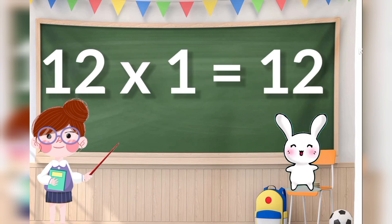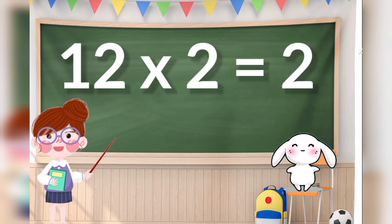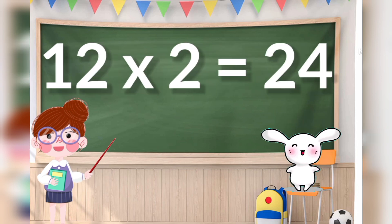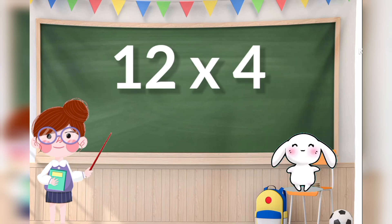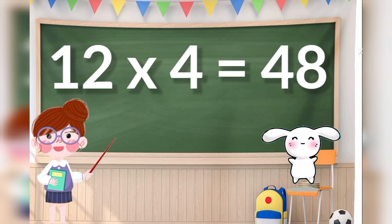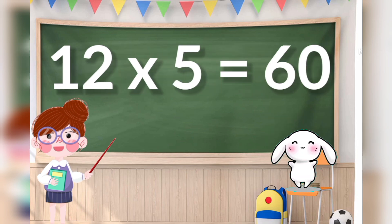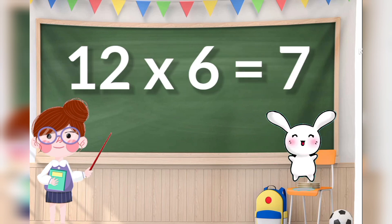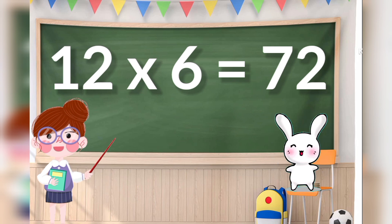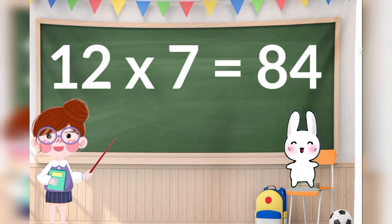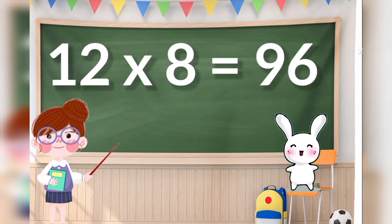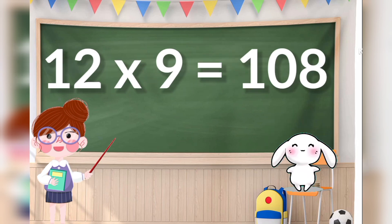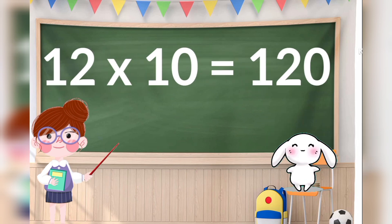12 ones are 12, 12 twos are 24, 12 threes are 36, 12 fours are 48, 12 fives are 60, 12 sixes are 72, 12 sevens are 84, 12 eights are 96, 12 nines are 108, 12 tens are 120.